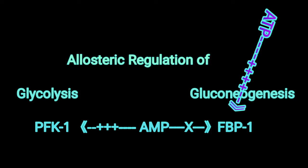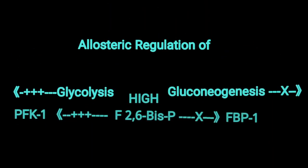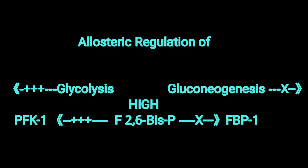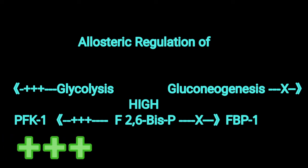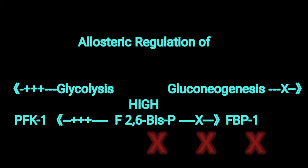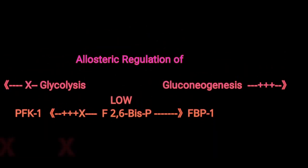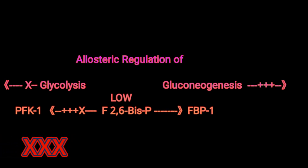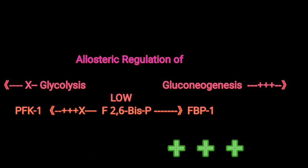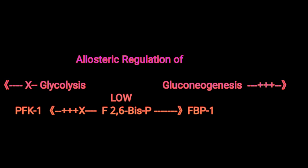Another allosteric regulator of both glycolysis and gluconeogenesis is fructose 2,6-bisphosphate. When this molecule is elevated in the liver, it will activate PFK1 and inhibit fructose 1,6-bisphosphatase simultaneously. On the other hand, when fructose 2,6-bisphosphate is low, it will not be able to activate PFK1 or inhibit fructose 1,6-bisphosphatase, and therefore gluconeogenesis can proceed.